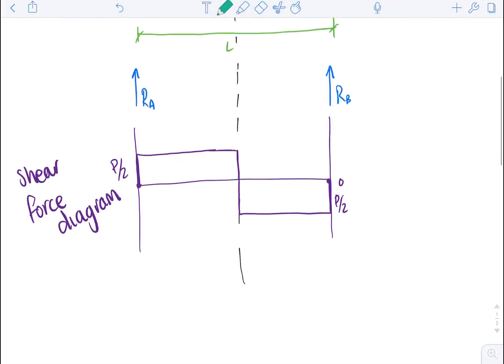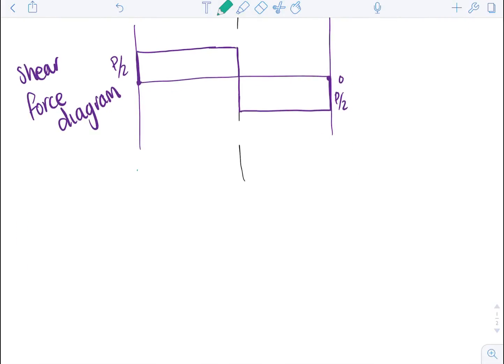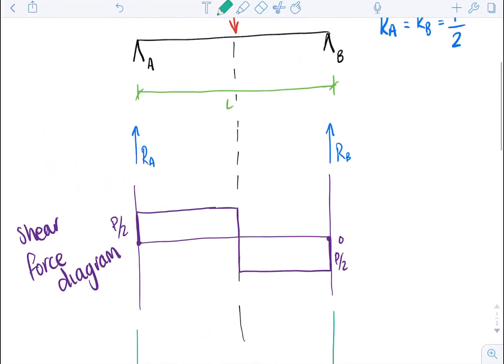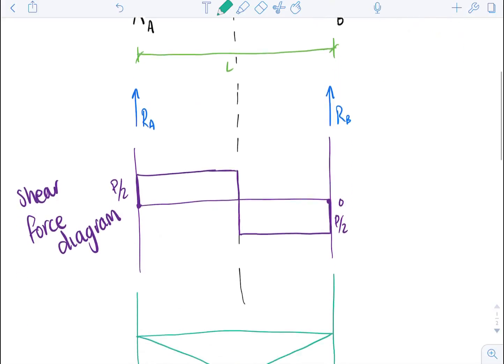So then the next thing to think about is the bending moment diagram. And in the case of the point force, this is going to be a triangular shape like this, with the maximum moment being at the center where the point force is acting.